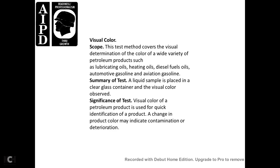Visual Color — Scope: covers visual determination of color of a wide variety of petroleum products including lubricating oils, heating oils, diesel fuel oils, automotive gasoline, and aviation gasoline. Summary: a liquid sample is placed in a clear glass container and visual color is observed. Significance: visual color is a quick means of identification; a change in color can indicate contamination or deterioration.